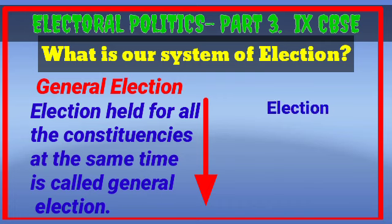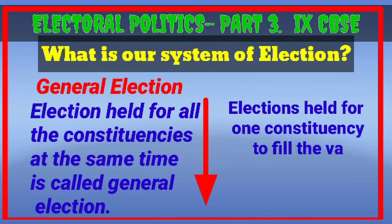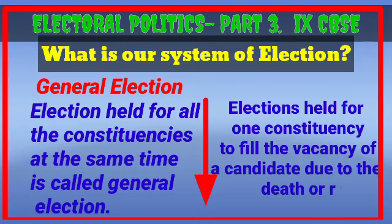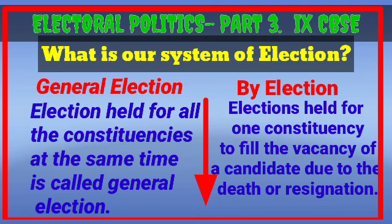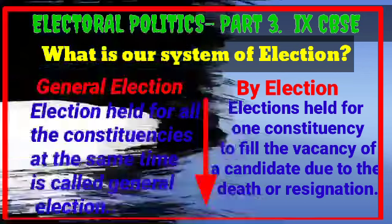Elections held only for one constituency to fill the vacancy of a candidate caused by death or resignation of a member is called a by-election. So remember the differentiation: a general election means elections held for all the constituencies at a time, while a by-election means an election conducted only for one constituency due to the vacancy of a candidate due to death or resignation.